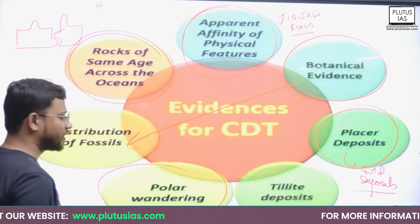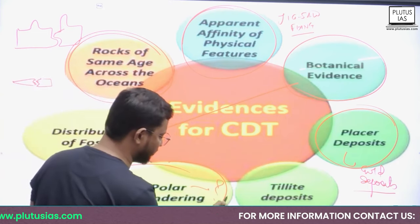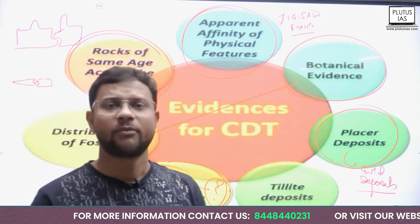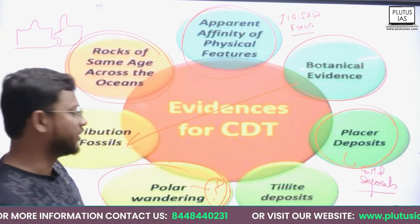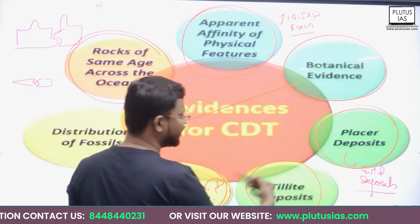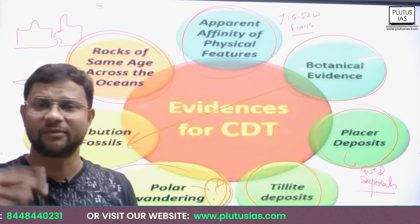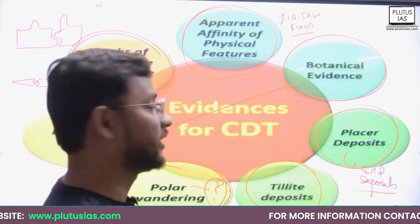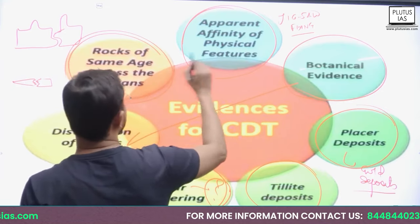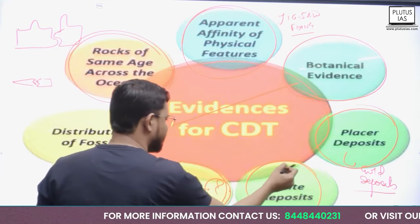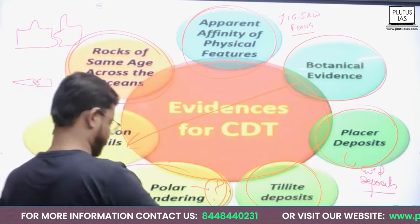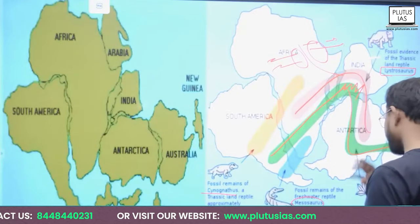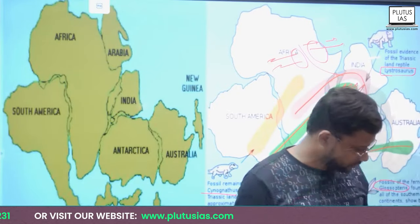Polar wandering — let me know in the comment box what polar wandering is. This topic I will not explain now, but it is considered as evidence. Tillite deposits — tillite deposit means simply the deposits laid by glacier erosion. Those are the tillite deposits. These are the various evidences given by Alfred Wegener.